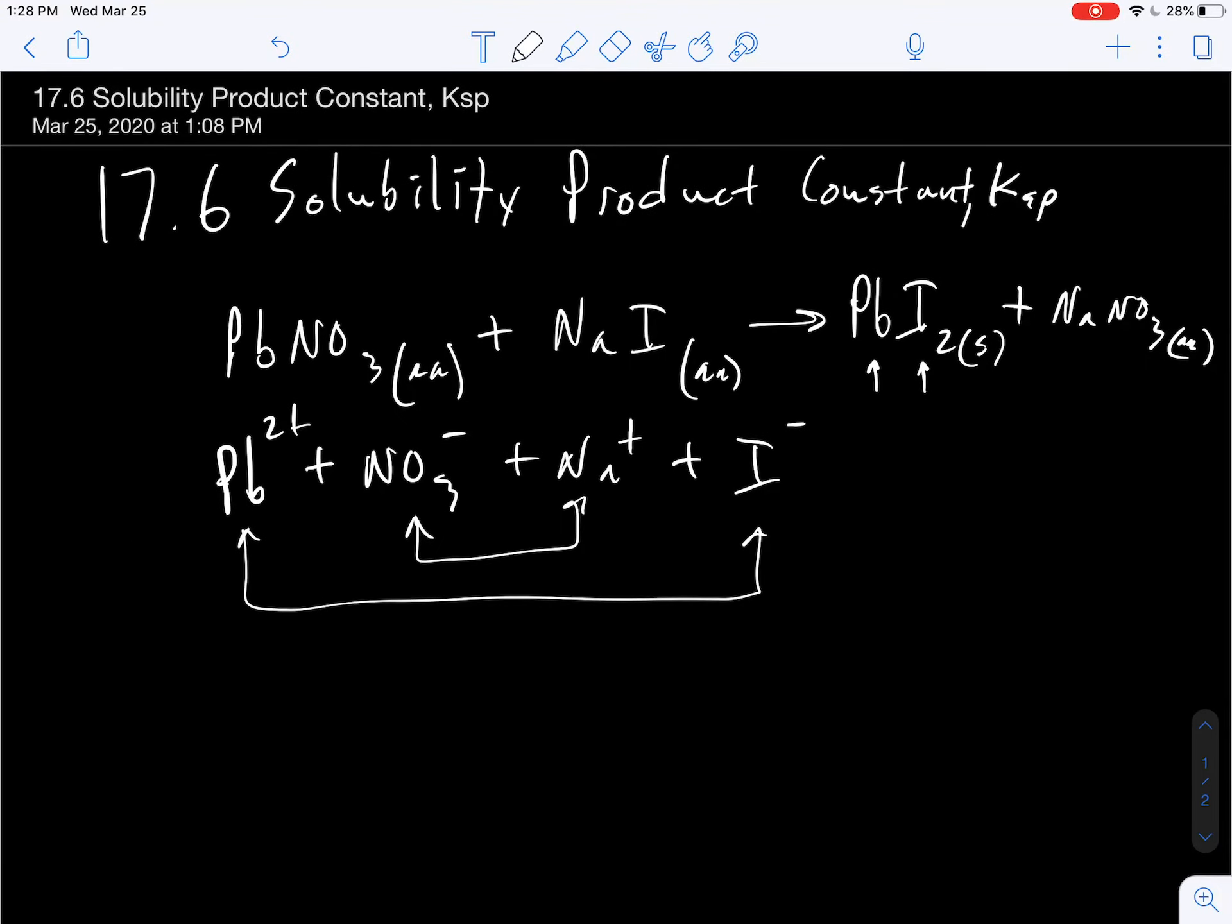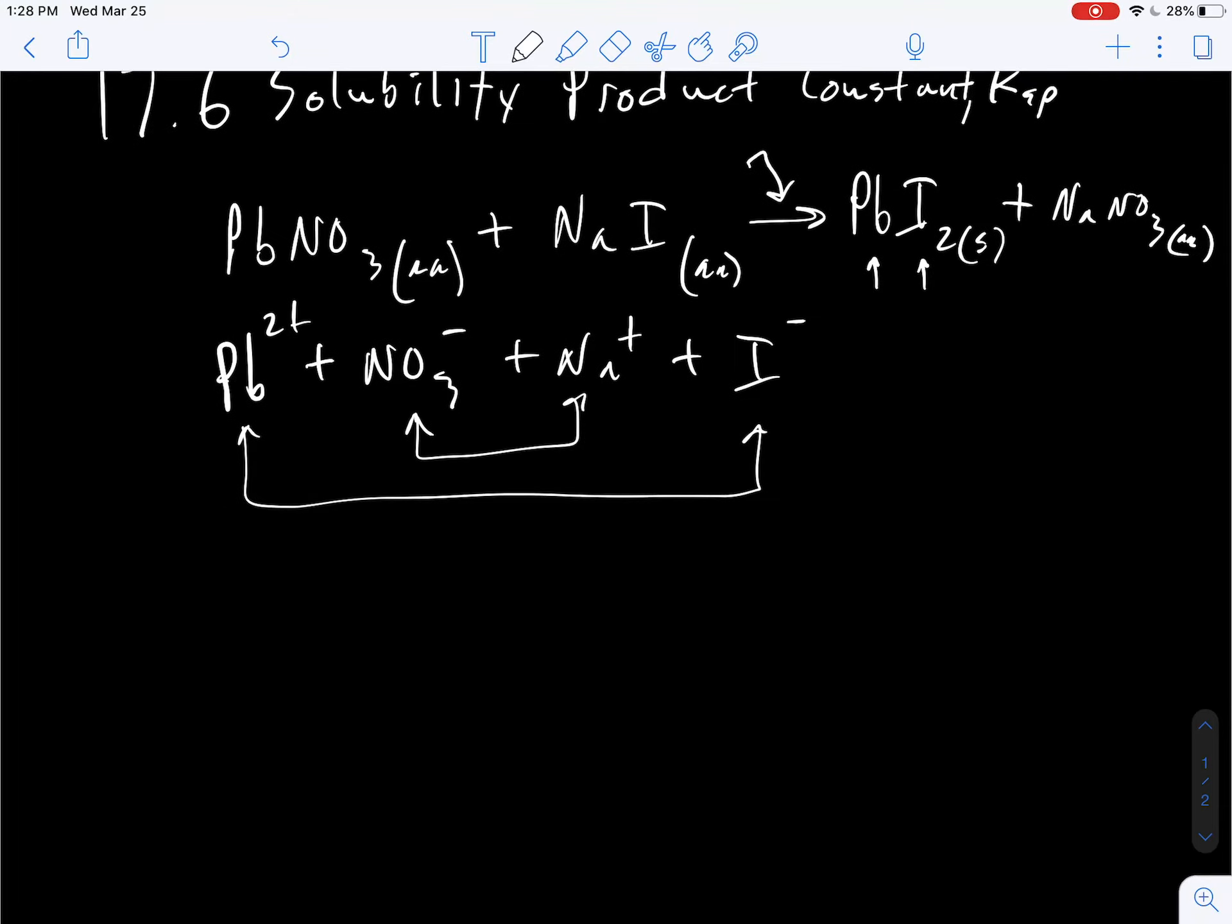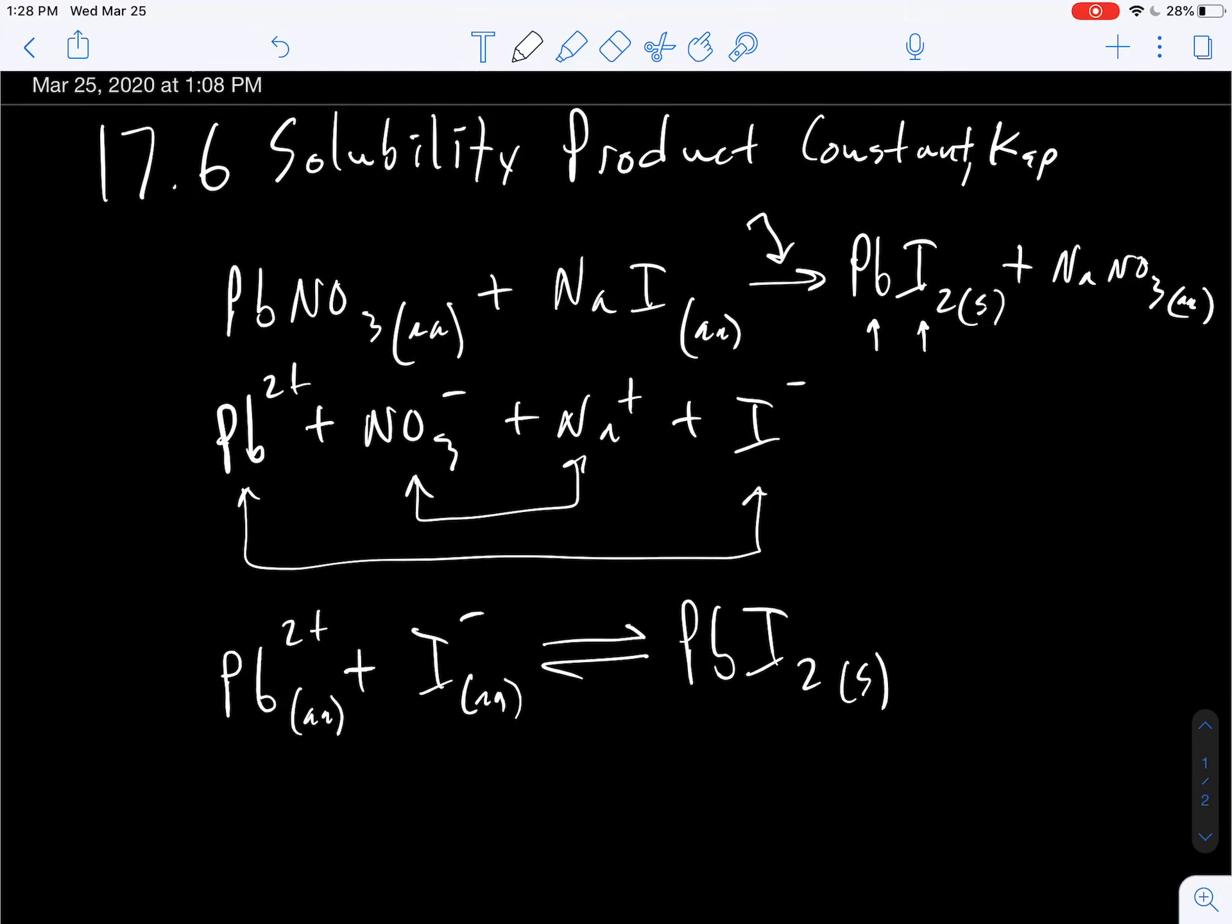And we thought of these as just one arrow going in this direction. Let's actually just break this down into the net ionic equation for a second. So just look at Pb 2 plus, plus I minus. In reality, this is also an equilibrium. So it's not correct to just draw one arrow. This is an equilibrium with PbI2.